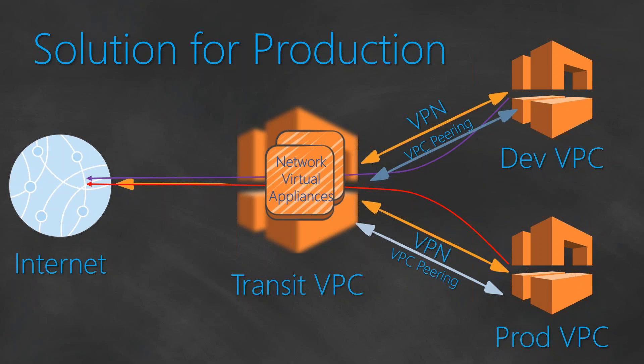That is how you set up traffic from your production VPC to the internet through a transit VPC. In this use case I showed only two VPCs, but you can connect multiple VPCs to your transit VPC as well. Go ahead, check it out, and if you have any questions put them in the comment section — I'll be happy to help.